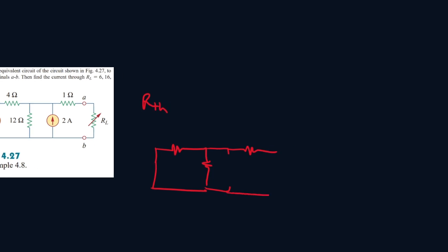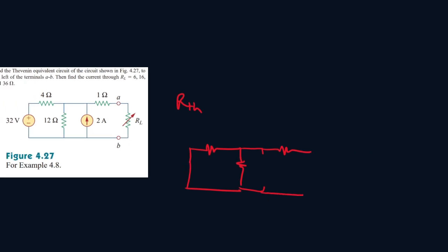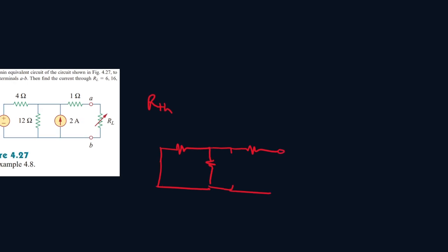And then since we're finding the Thévenin between terminals A and B, we'll first ignore this for now. So it will be an open wire in this portion.